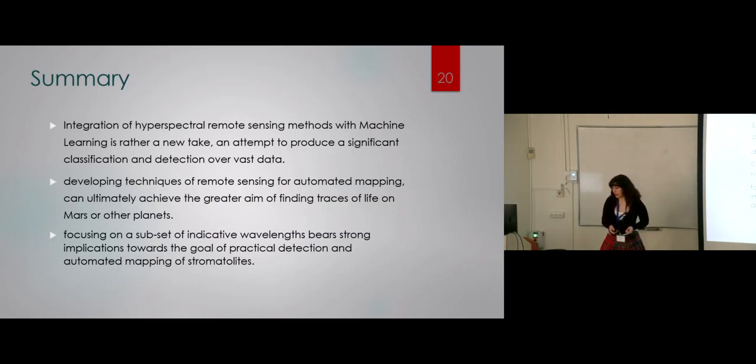To summarize, integration of hyperspectral remote sensing methods with machine learning methods is rather a new take. I tried to make a big dataset instead of sampling only 4 to 10 stromatolites, which was done in research in Australia before. So developing those techniques and trying to optimize the subset of which wavelengths could be the footprint of the stromatolites can ultimately achieve the goal of automated mapping of traces of ancient life forms on Earth or on Mars.